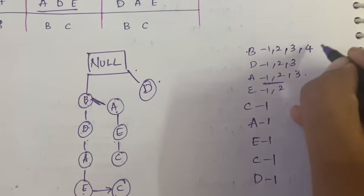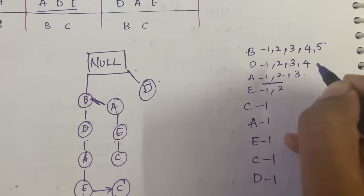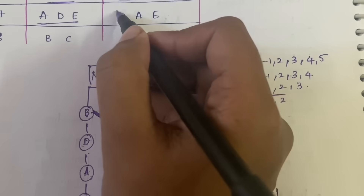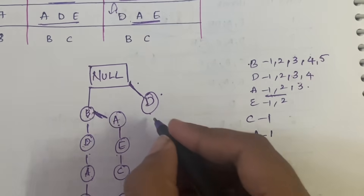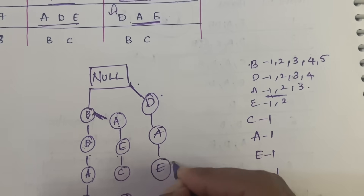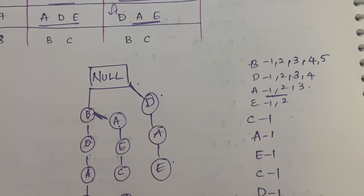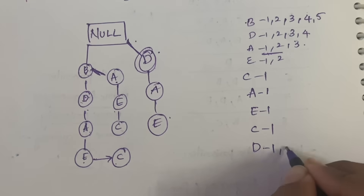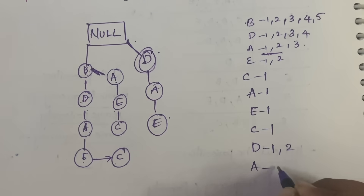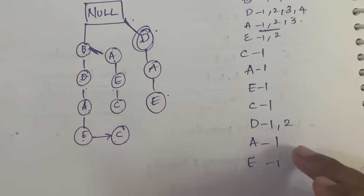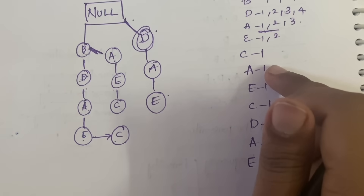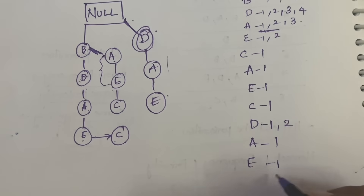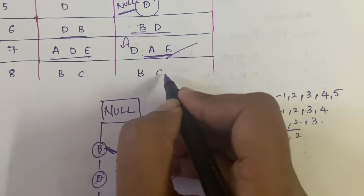After that, the next transaction is B, D — we already have B, D, so just update occurrences: B becomes 5, D becomes 4. Next is D, A, E. For null we should have D starting directly — we have the D branch from root. A and E are newly attached to this D. So D becomes 1 comma 2 since we are using it for the second time, and A and E are written freshly as 1 each.